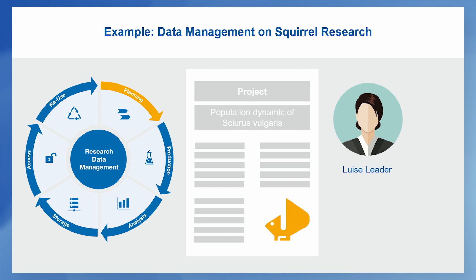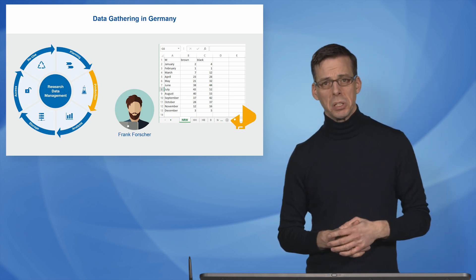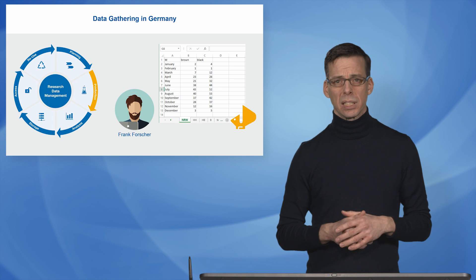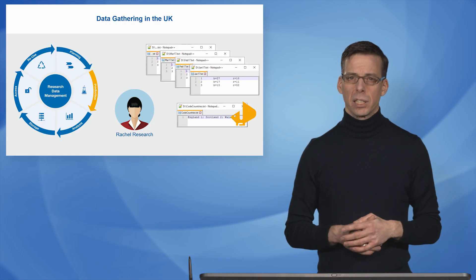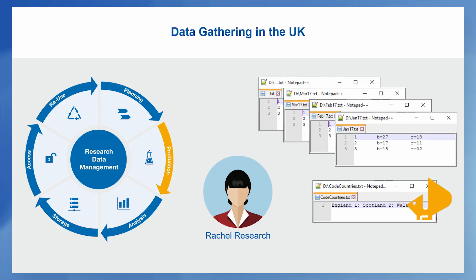She's lucky — the project is granted, so they can bring in people to work on it. One of these persons is Frank Forscher from Germany, who is well connected to the Rangers in Germany and has great experience in data gathering. He has a clear idea of how he will organize the collection. For data gathering in Great Britain, Rachel Research is working with Louise. She's quite new in the area and organizes it in a monthly way, traveling through all the regions.